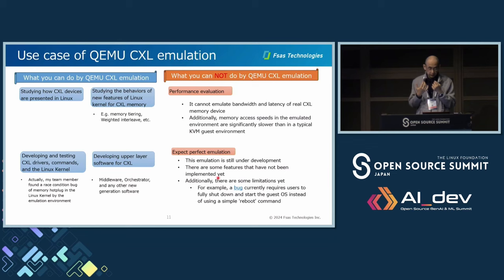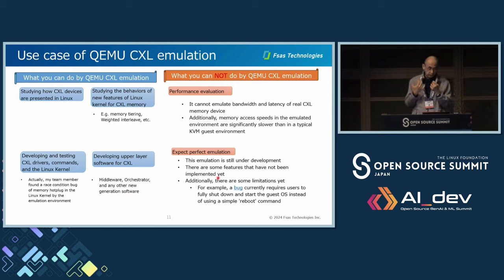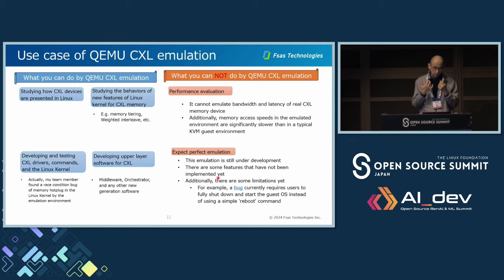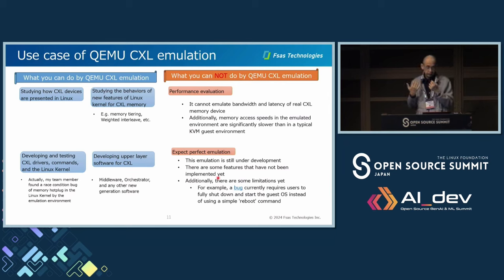Another use case is developing and testing CXL drivers, commands, and the Linux kernel itself. In fact, my team member found a race condition bug in the memory hot plug feature of the Linux kernel using this emulation environment. Another use case is developing upper-layer software for CXL — middleware, orchestrators, and other next-generation software.